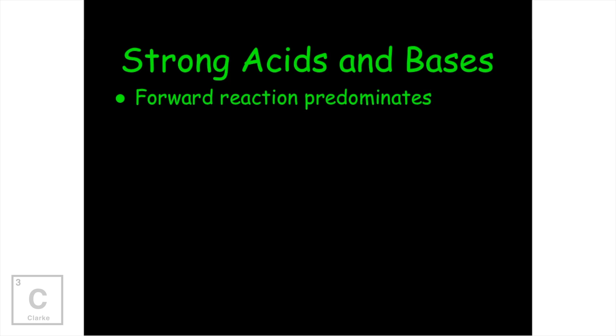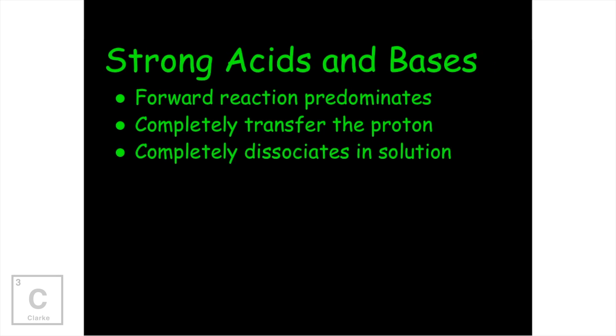If you have strong acid and you dissolve it in water, it's going to completely dissociate. Strong acids completely transfer their proton, meaning they're going to completely dissociate. So the reaction is going to proceed toward the products. The protons are completely transferred, which means they're completely dissociating in solution. When you have a strong acid or a strong base, its conjugate is going to be weak.